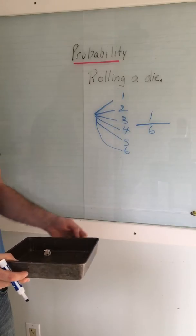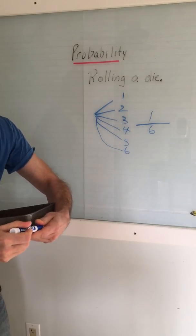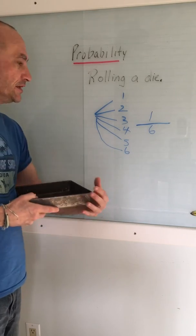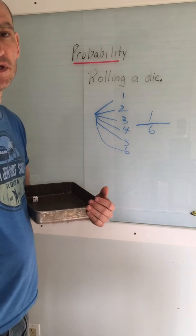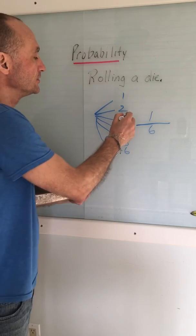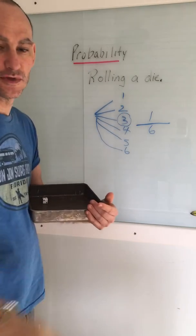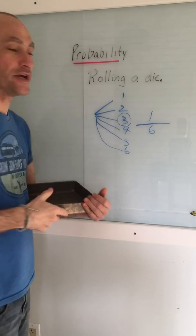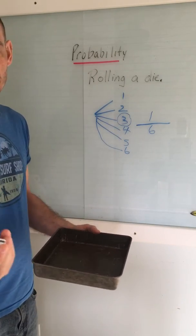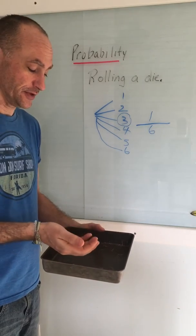Okay, so we're going to do a couple here. We're going to see what the odds are of rolling a 3. So we have a 1 in 6 chance of rolling a 3. I'm going to roll the dice 6 times and we'll find out how many times we get a 3. So here we go.